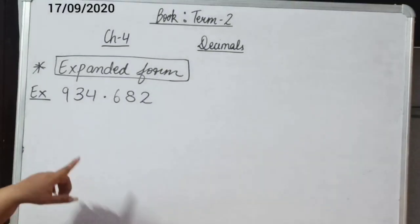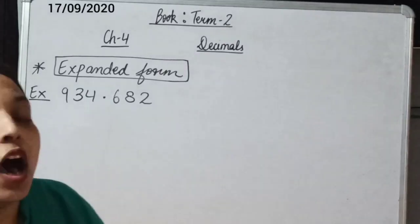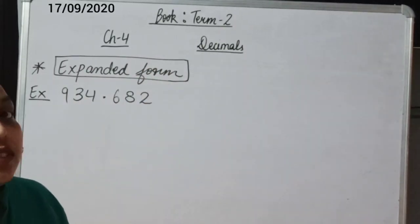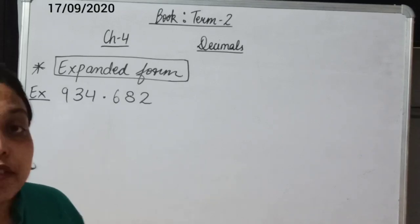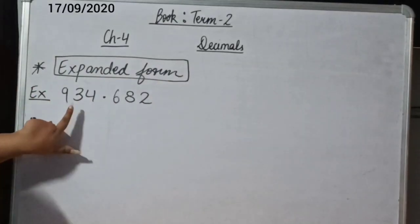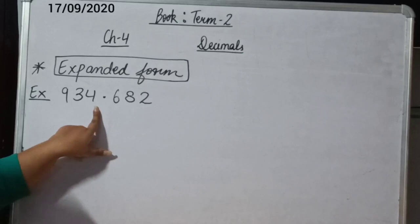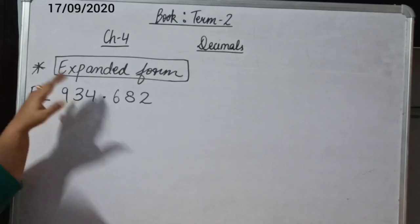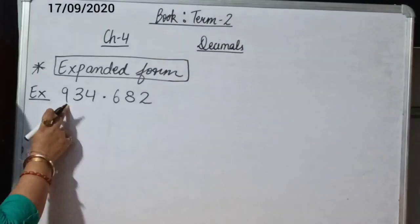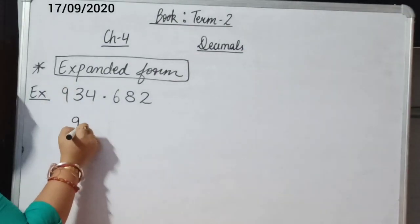As we have studied, a decimal number consists of a decimal point, a whole part, and the decimal part. In previous chapters we studied how to expand a whole part by writing the place value of each digit. We find the place value by multiplying the digit with its place. In this example I have 934 as the whole part. The place value of 9: multiply 9 by 100, which gives 900.